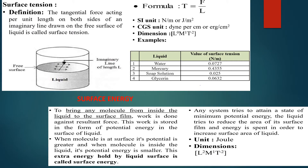From the previous discussion, we understand that if we draw an imaginary line in a liquid surface, it will experience some tangential force. Hence, surface tension is defined as the tangential force acting per unit length on both sides of an imaginary line drawn in the free surface of a liquid. Its SI unit is Newton per meter or Joule per meter square. The CGS unit can be written as dyne per centimeter or erg per centimeter square. A data table gives the values of surface tension for certain liquids — mercury has the maximum surface tension whereas soap solution has the minimum.